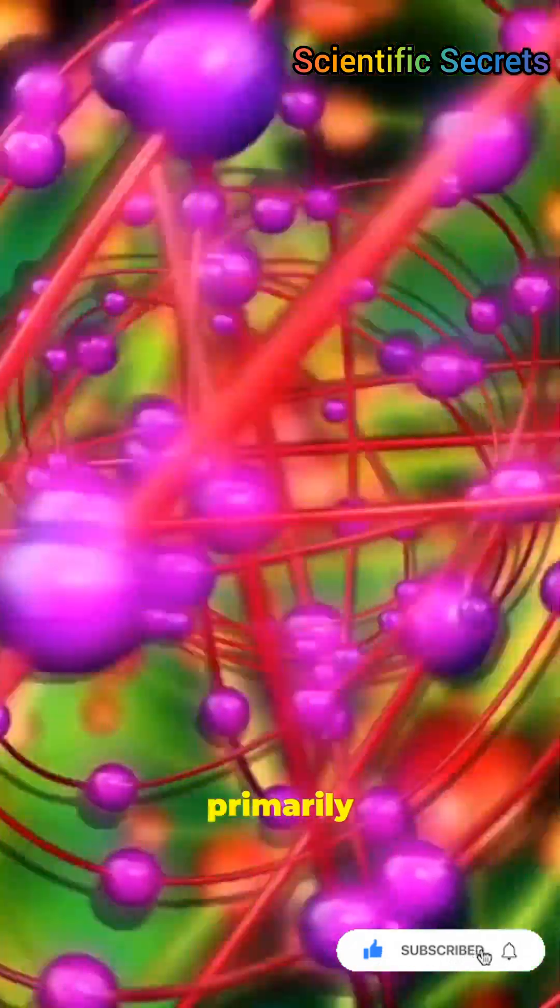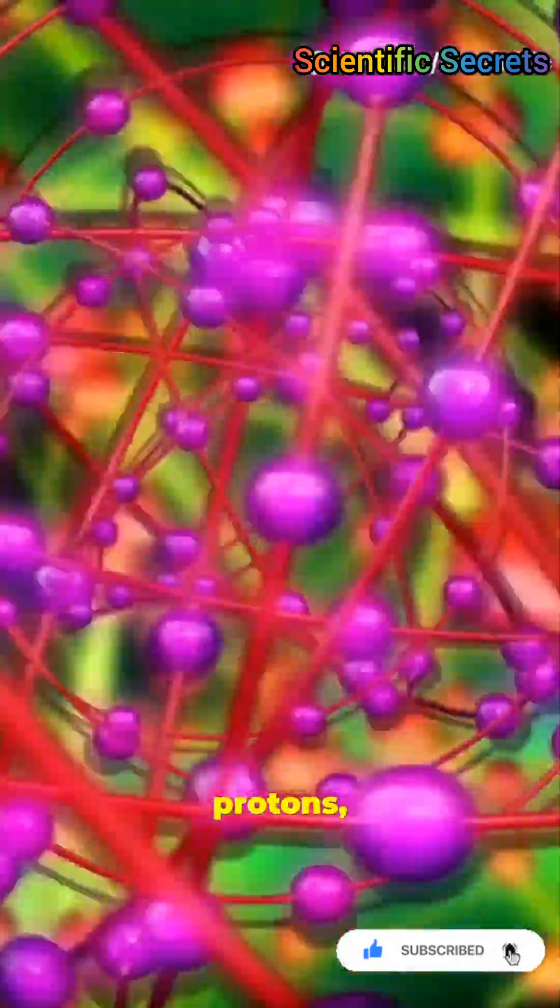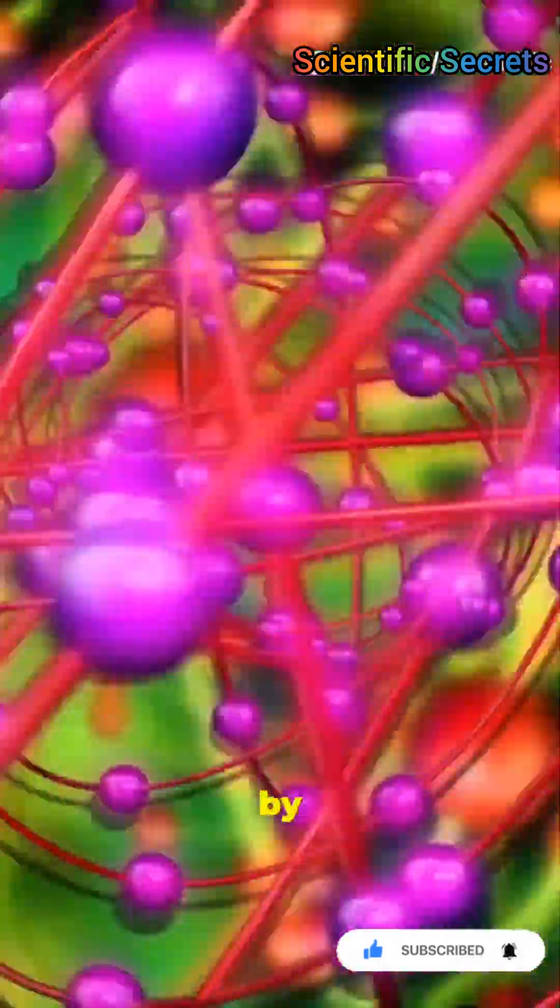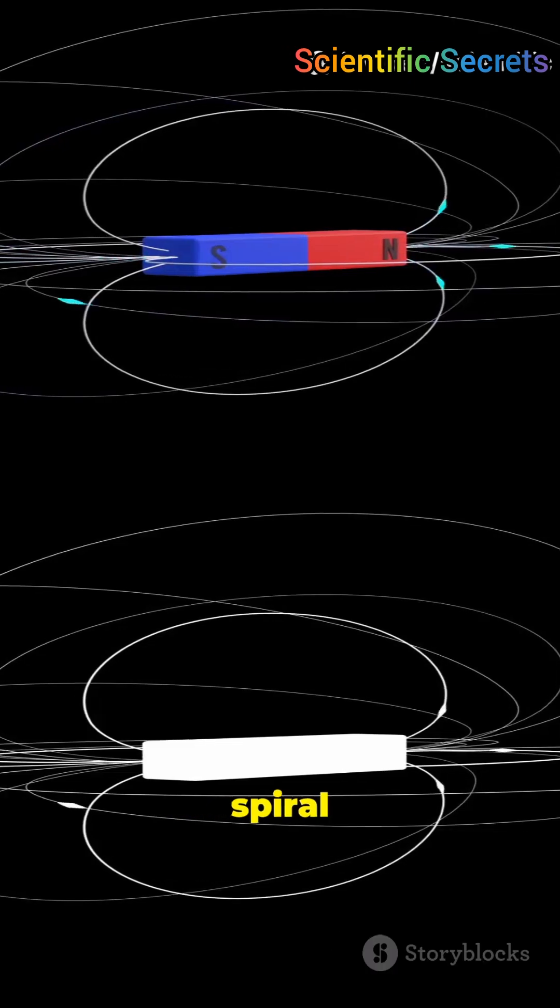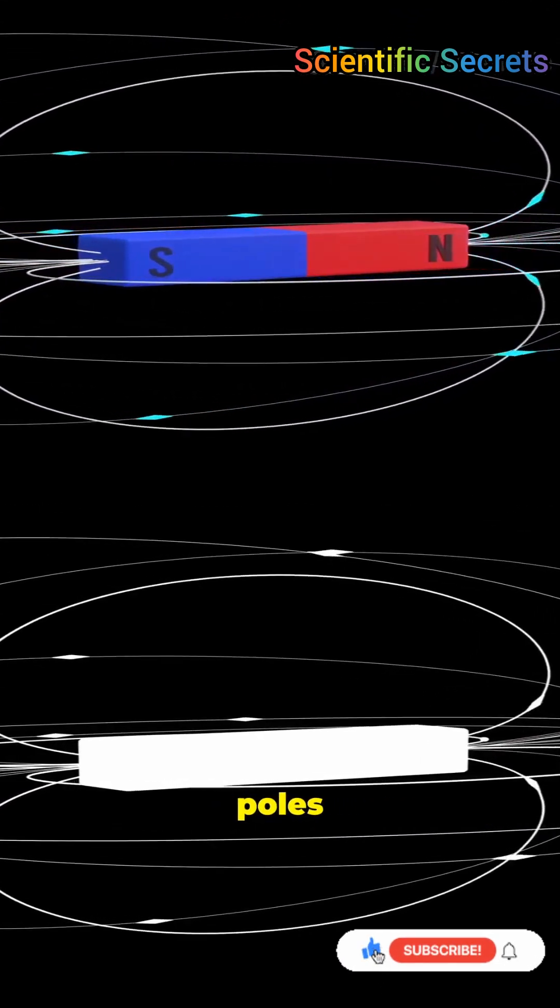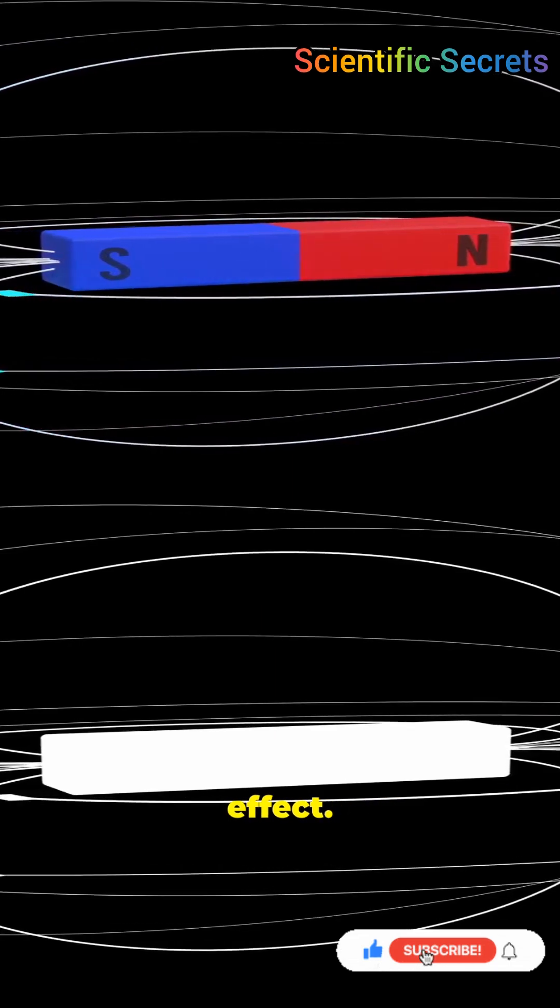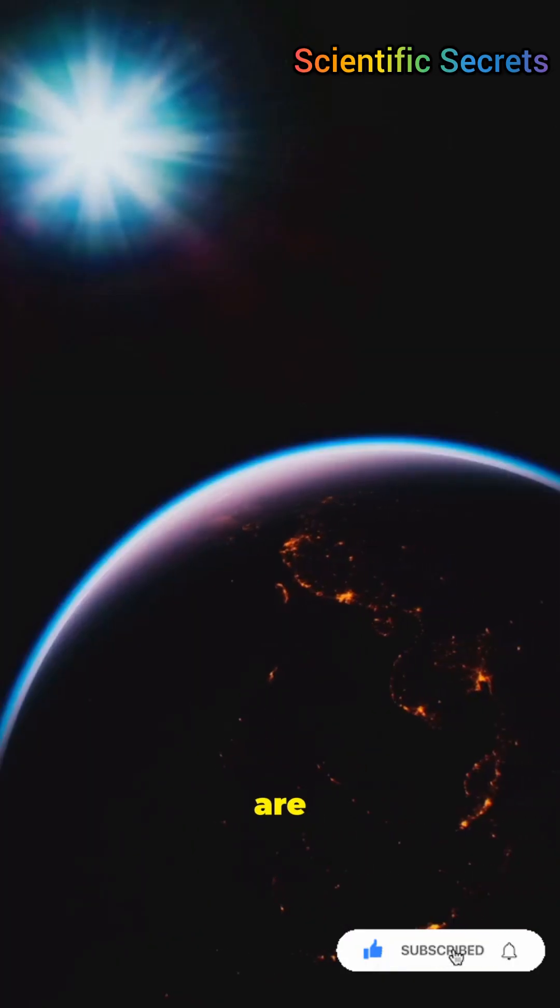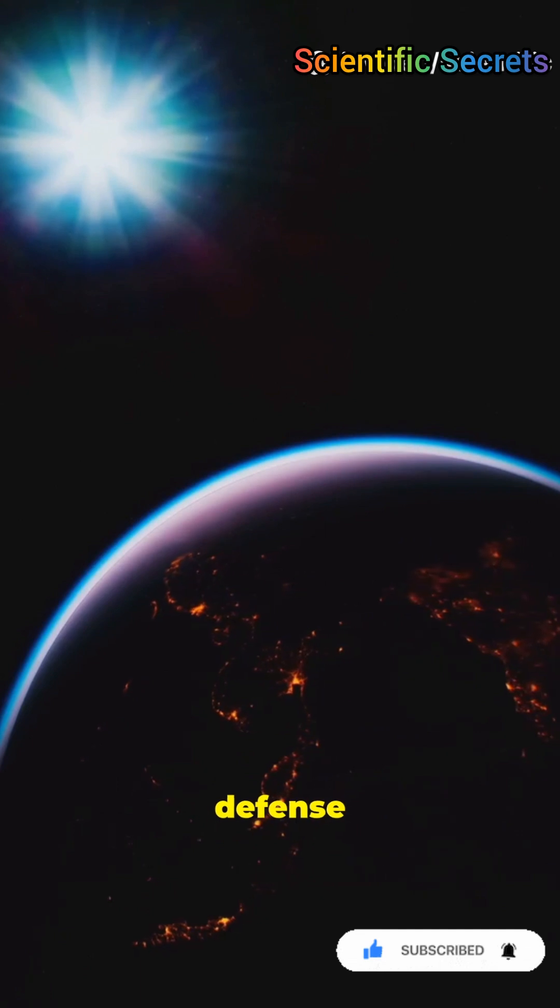The inner belt primarily contains high-energy protons, while the outer belt is dominated by electrons. These particles spiral along magnetic field lines bouncing back and forth between the poles in what is known as the mirroring effect.